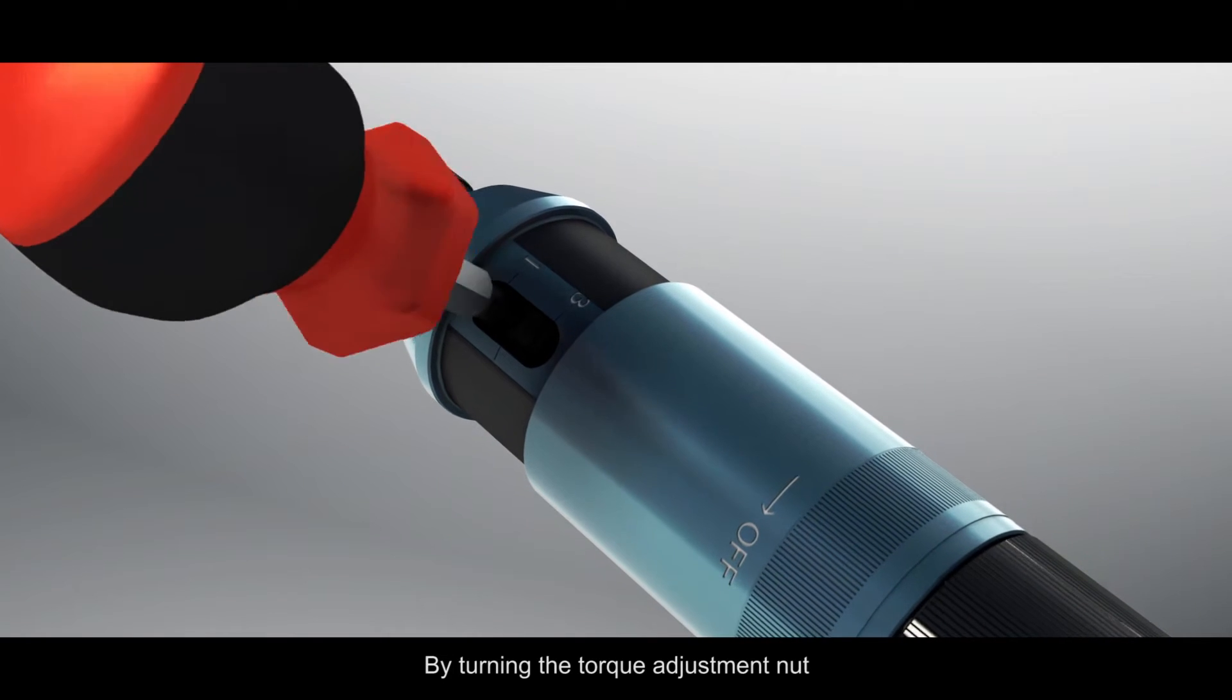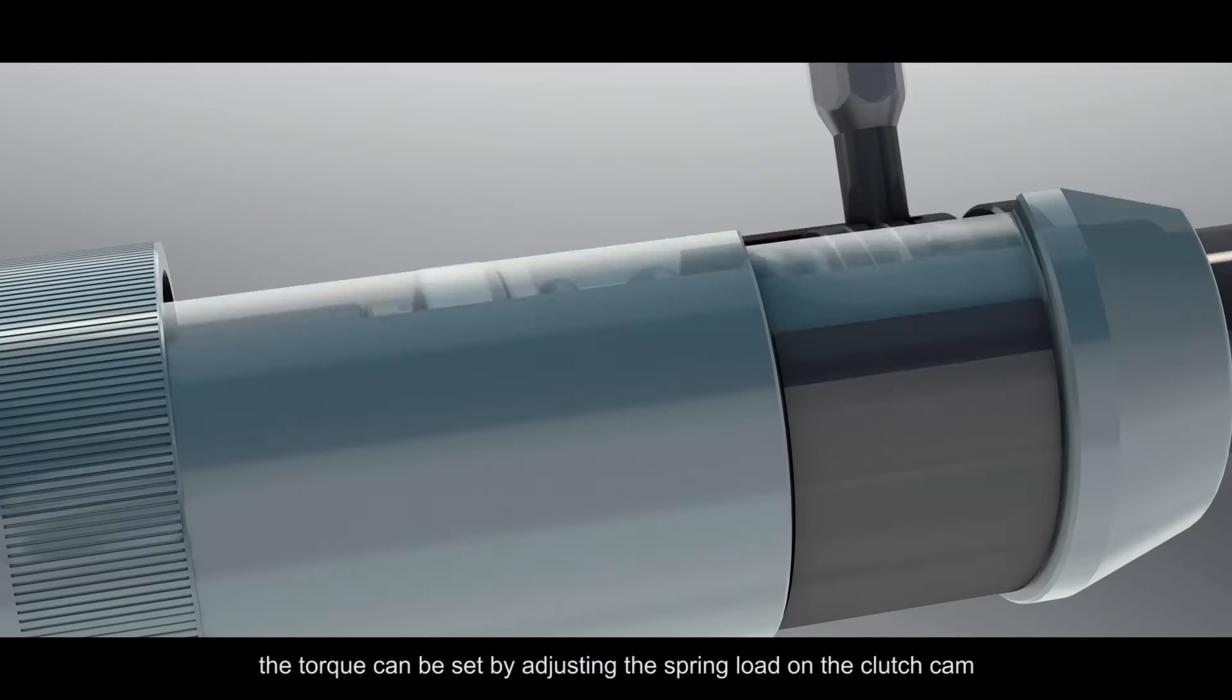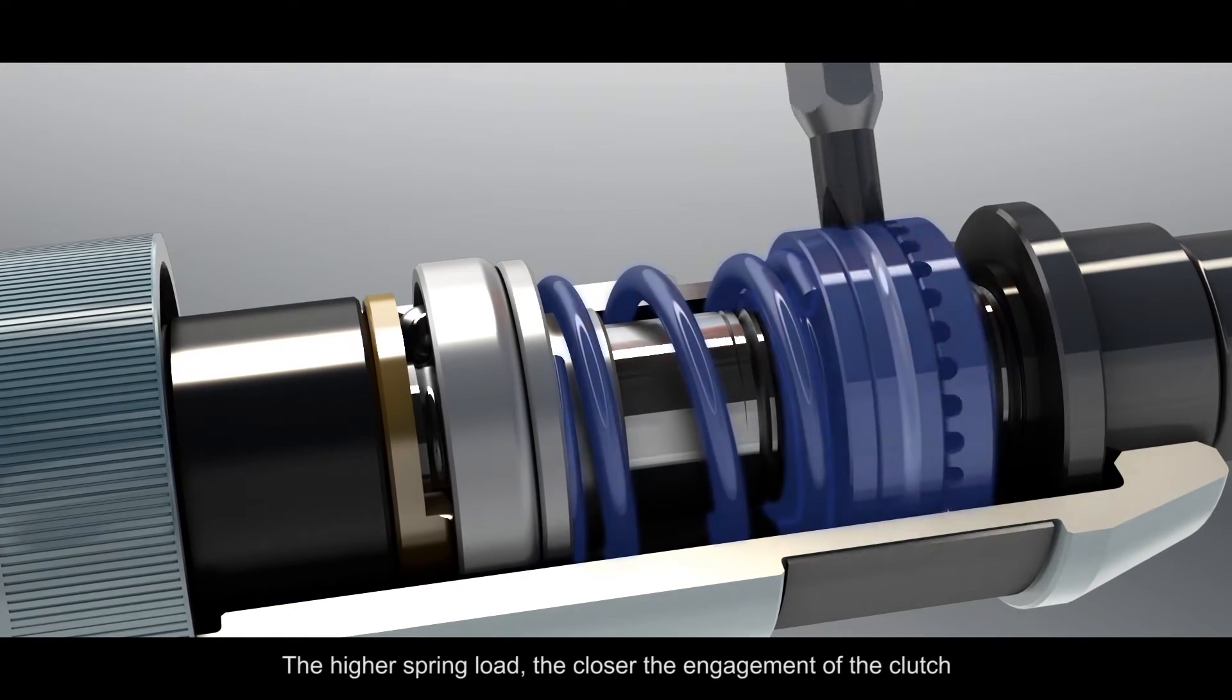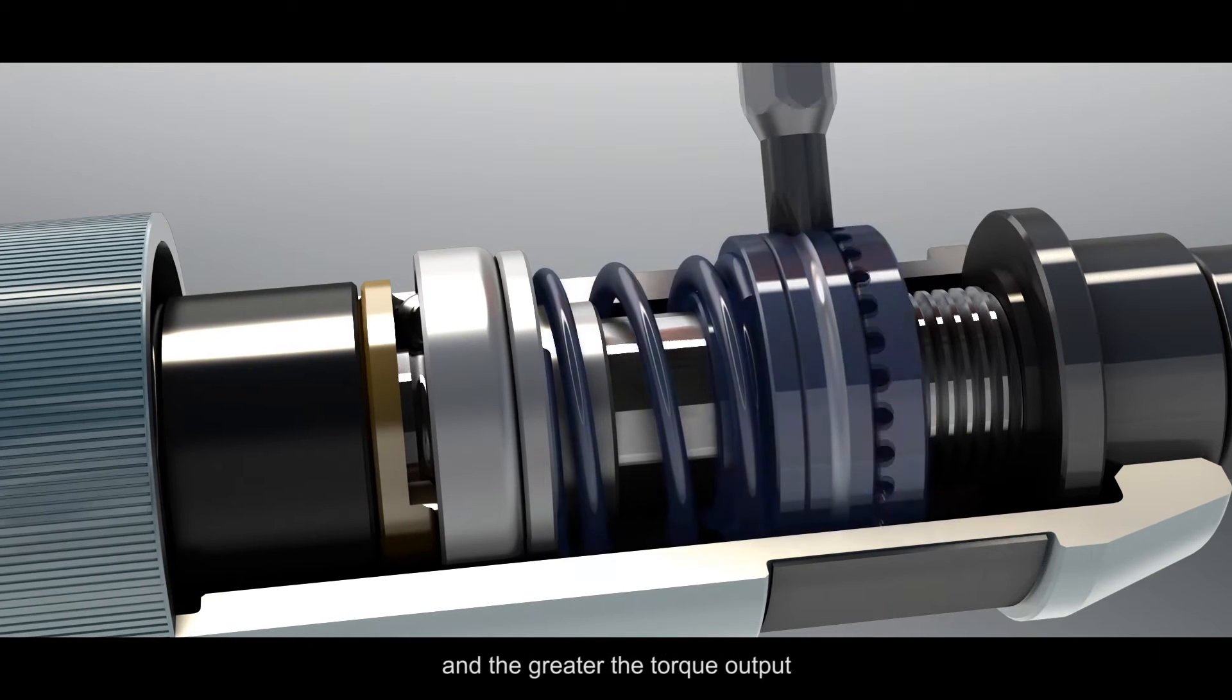By turning the torque adjustment nut, the torque can be set by adjusting the spring load on the clutch cam. The higher the spring load, the closer the engagement of the clutch and the greater the torque output.